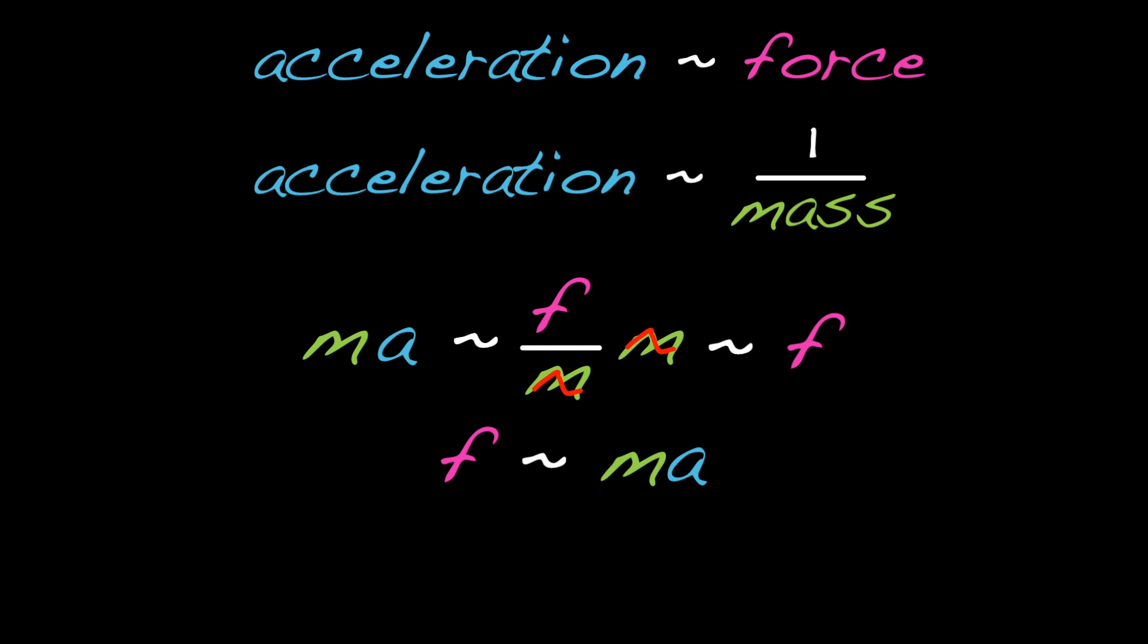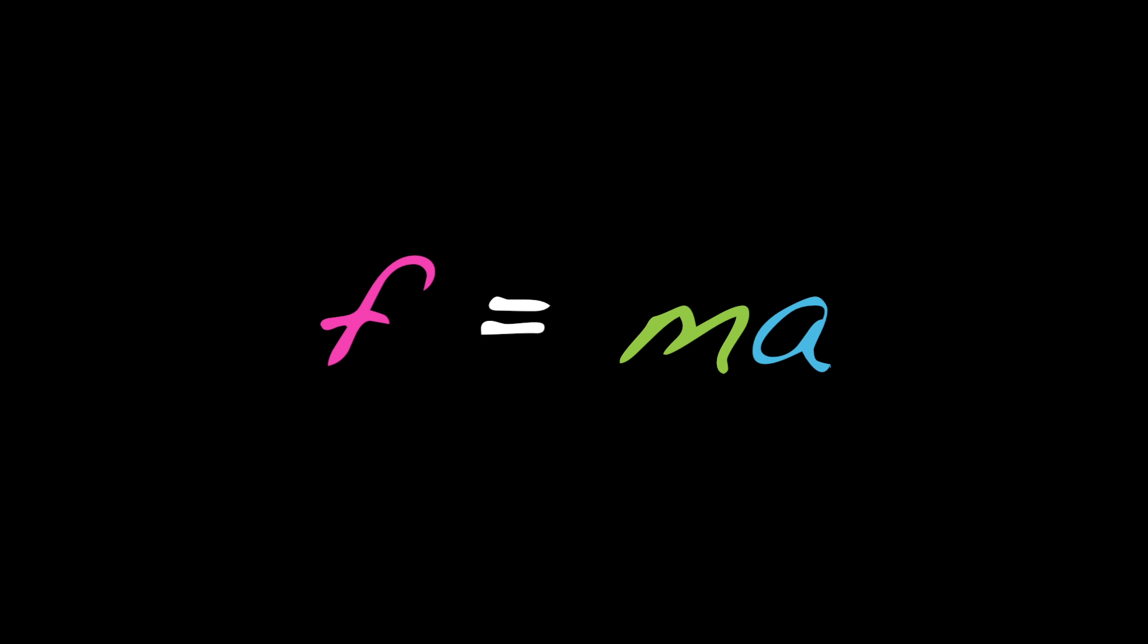Newton found that f isn't just proportional to ma, it's in fact equal to ma. This is Newton's second law, f equals ma. To recap, f is the net force acting on the particle, m is the mass of the particle, and a is the acceleration of the particle.